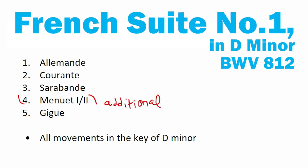Bach's first French Suite in D minor has five movements. It has the four standard dance suite movements — allemande, courant, sarabande, and gigue — and then the additional movement, the minuet, that composers sometimes chose to add between the sarabande and the gigue. All of these movements are in the key of D minor, which is what allows them to sound consistent when played back to back.